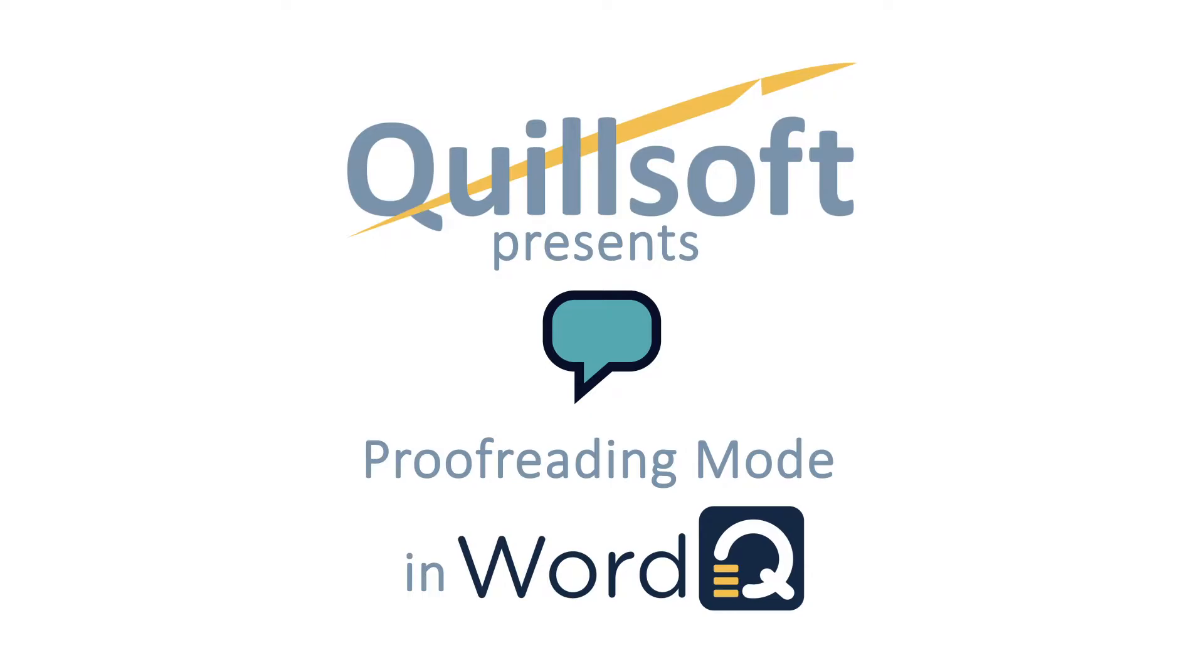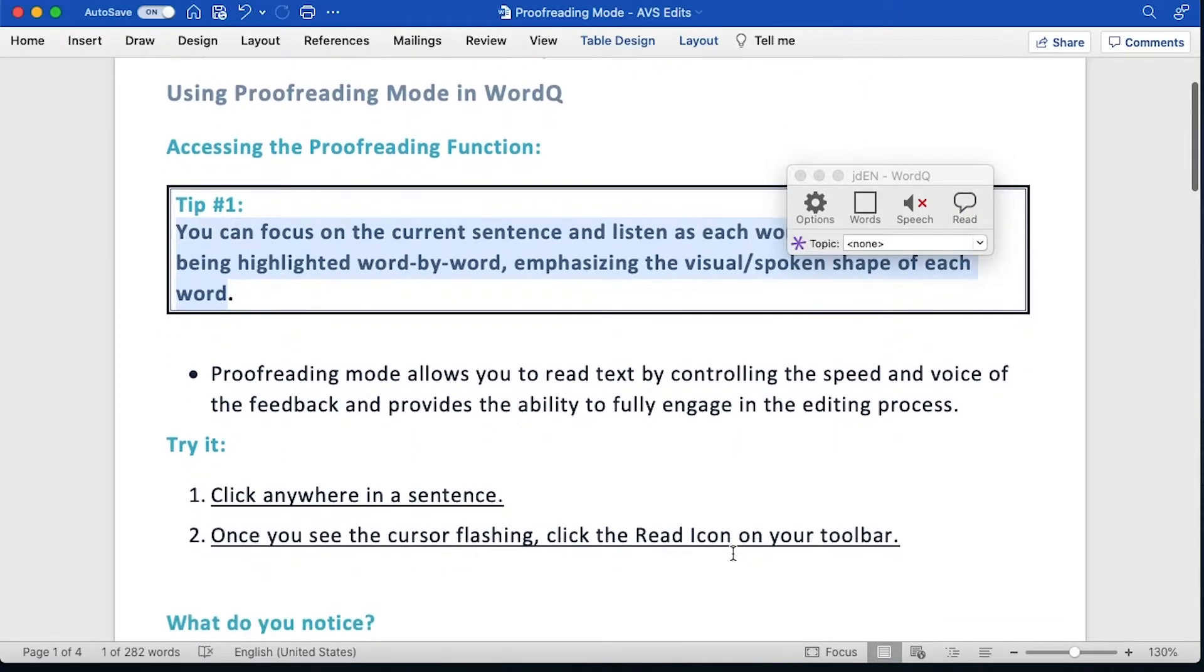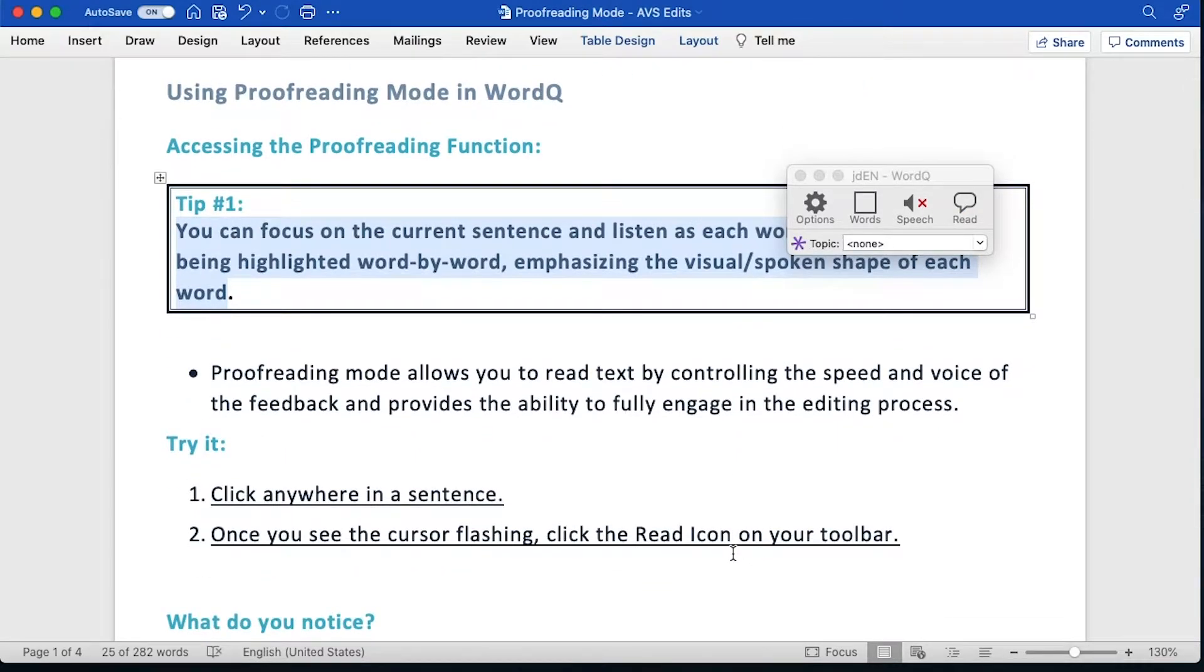So how do we access the proofreading function? Let's take a look at tip number one. You can focus on the current sentence and listen as each word is spoken while being highlighted word-by-word, emphasizing the visual and spoken shape of each word. Proofreading mode allows you to read text by controlling the speed and voice of the feedback and provides the ability to fully engage in the editing process.